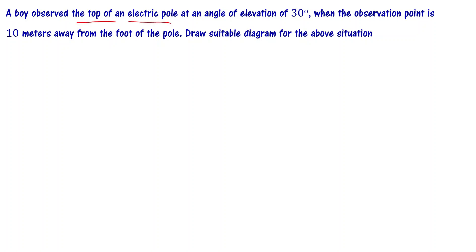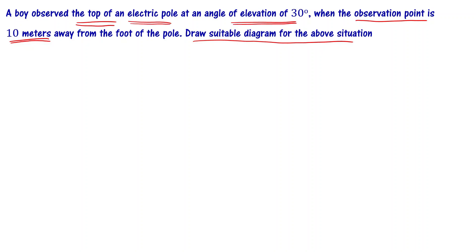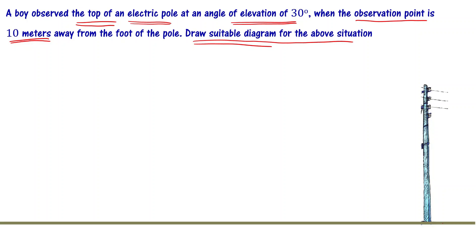A boy observed the top of an electric pole at an angle of elevation of 30 degrees when the observation point is 10 meters away from the foot of the pole. The boy observed the top of an electric pole at an angle of elevation of 30 degrees. First of all, draw the diagram — draw an electric pole with its foot at the bottom and top above.